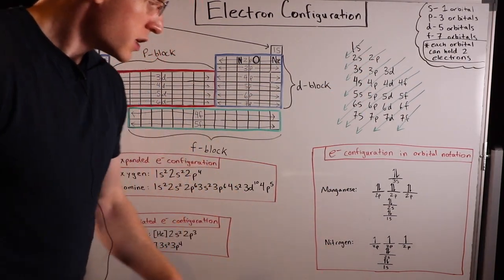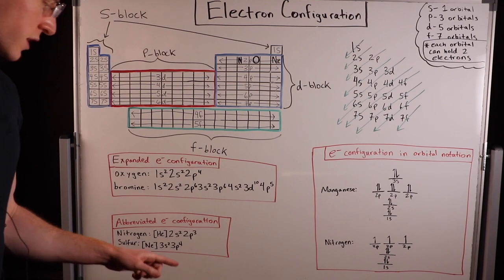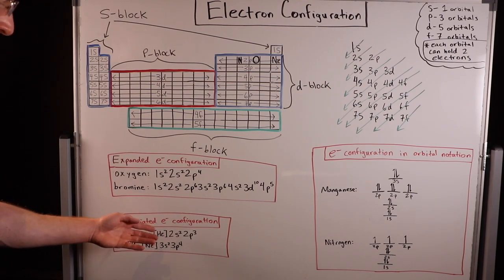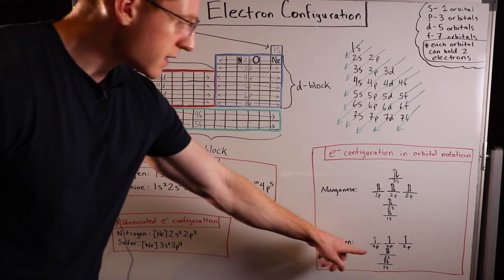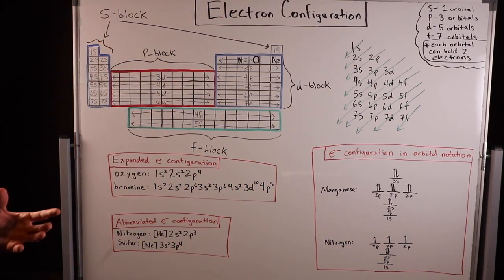We can do the same thing for nitrogen. We know nitrogen has an electron configuration of 1s2 or helium, 2s2, 2p3. That's what that would look like in orbital notation.